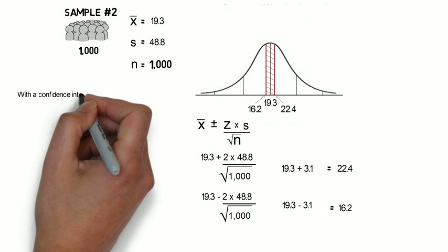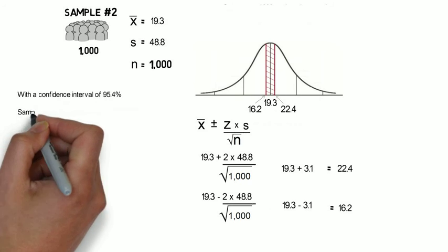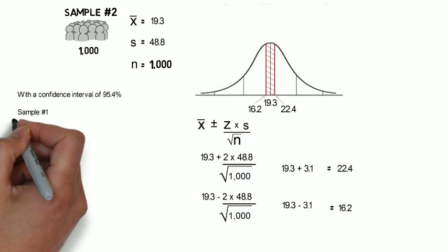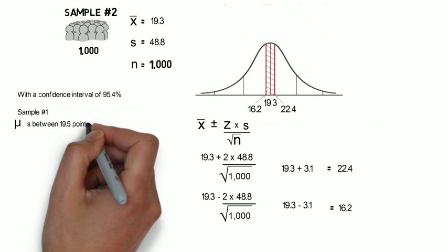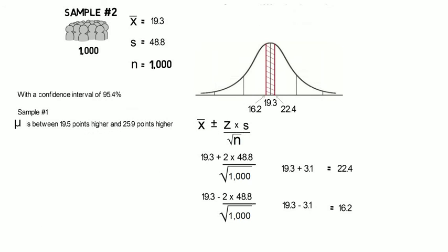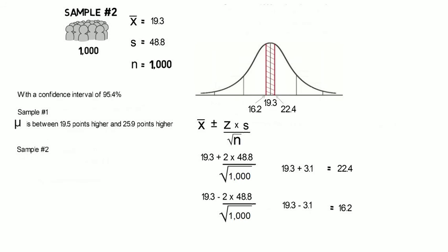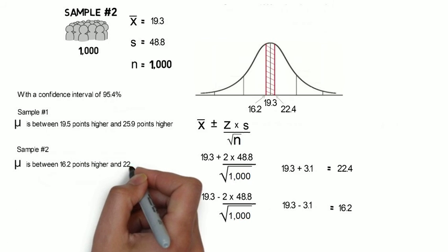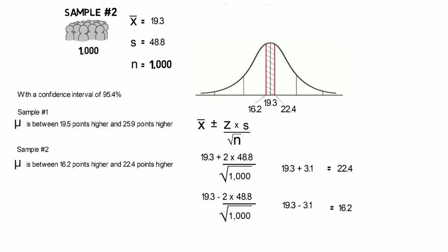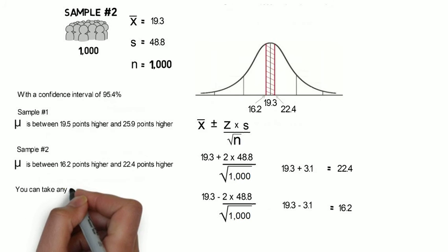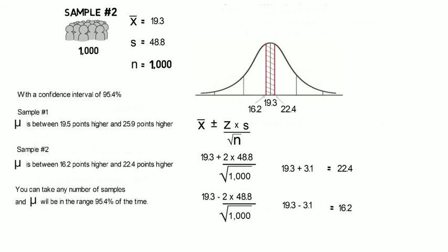From sample 1, the population mean is between 19.5 points higher and 25.9 points higher. Or from sample 2, same confidence interval, 95.4%. We can say, μ is between 16.2 points higher and 22.4 points higher. And we're going to be right 95.4% of the time. We could take any number of samples and say this with that confidence level using this formula and this methodology.